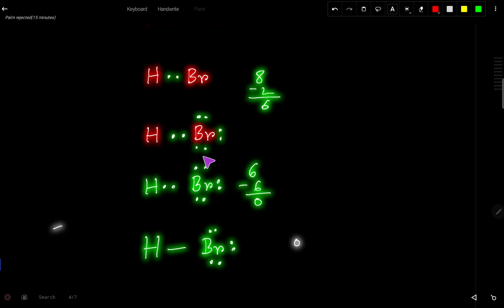This section and this section are similar. We can express this bond pair as a dash. A dash means two electrons in a bond. So the Lewis structure of HBr is this. Thank you for watching this video.